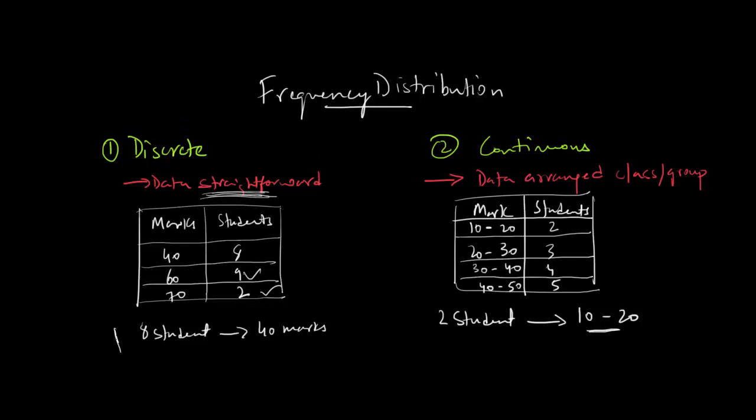In discrete frequency distribution, the data is pretty straightforward. In continuous frequency distribution, the data is in the form of class or group. Therefore, the measurement is not exact—you cannot say the exact marks a particular student has got.